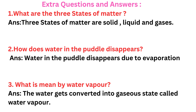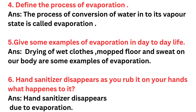Extra Question 3: What is meant by water vapor? Answer: When water gets converted into its gaseous state, it is called water vapor. Extra Question 4: Define the process of evaporation. Answer: The process by which water converts into its vapor state is called evaporation.